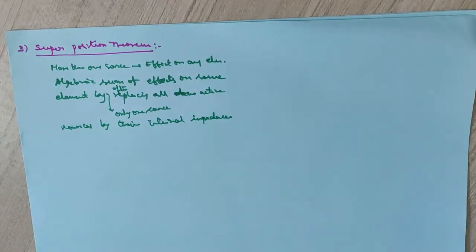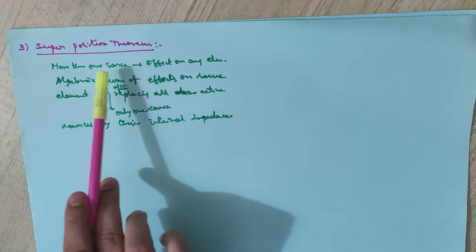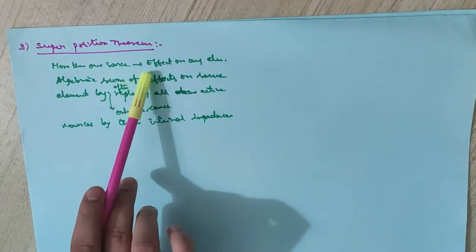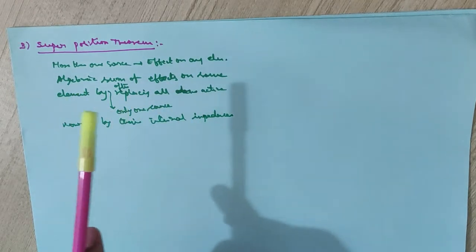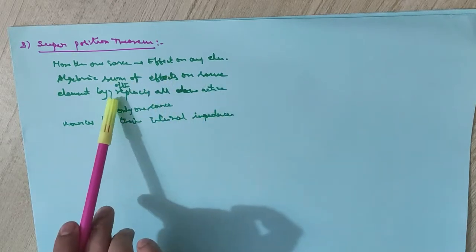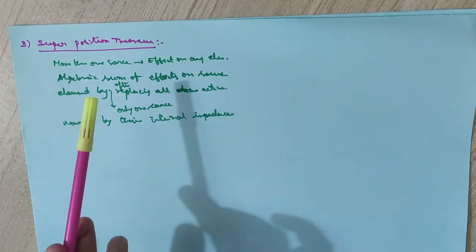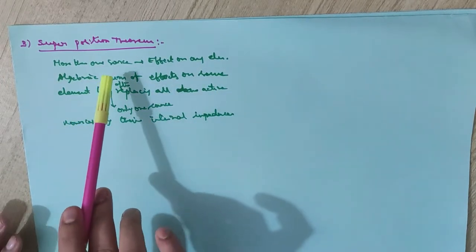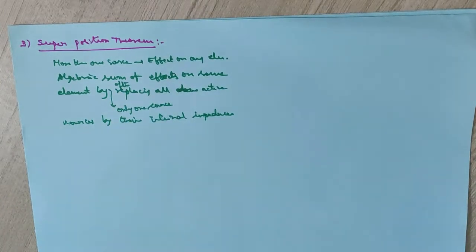Let us see an example. This statement is very simple. If we want the effect on any element and the sources are more than one, we need to have only one source active and replace all other sources, find the effect on that element. The same step has to be repeated for all the sources. At the end, we need to add all the results.